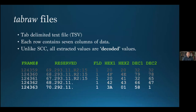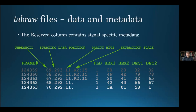In the Tab Raw format, all extracted values are decoded values. Unlike the SCC format, the end user doesn't have to perform parity checking of the data, because that work has already been done by the data extractor. The results of that parity check, along with other extraction metadata, are stored in the reserve column. There, delimited by the dot symbol, are four fields of data: threshold, starting data position, parity bits, and extraction flags.